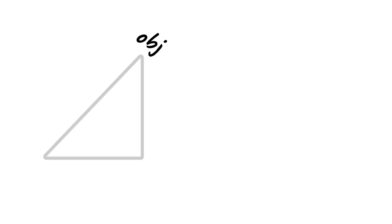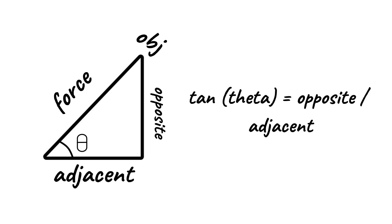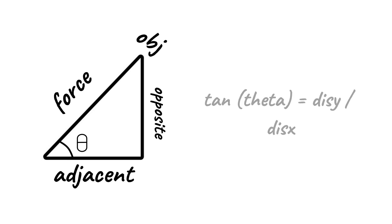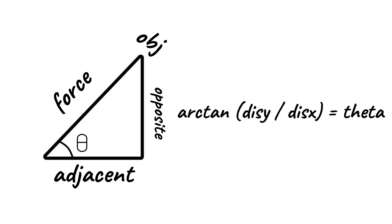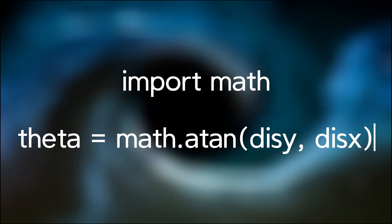If we look at the object, there's a right-angled triangle we can draw, where the hypotenuse is the force. In this right-angled triangle, we need to calculate angle theta. The tangent of theta is equal to the opposite over the adjacent, or distance y over distance x. Therefore, the arctangent of y over x, or the inverse tangent of y over x, is equal to theta. We have distance y and distance x — we calculated them earlier when finding the distance with Pythagoras' theorem. In Python, we can use the math module to find the arctangent, so now we have theta.